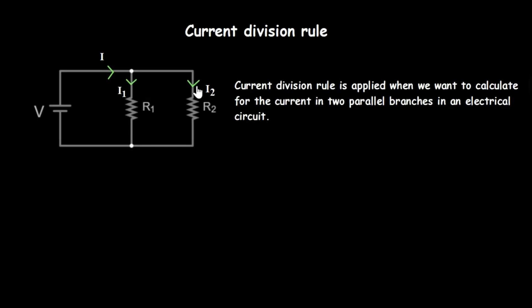When you apply the current division rule, you will be able to find the current i1 in the first branch and the current i2 in the second branch. From Ohm's law, we know that voltage equals current times resistance — specifically, voltage equals current times total resistance, which I'll call R_t.